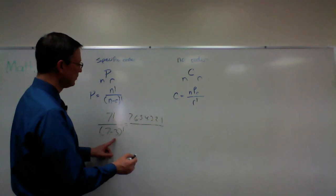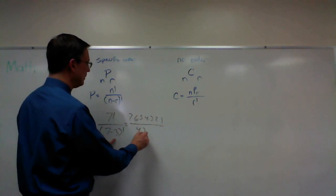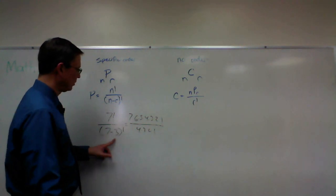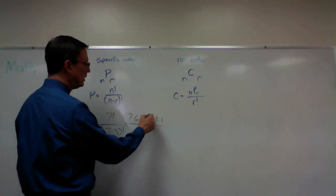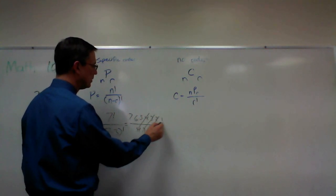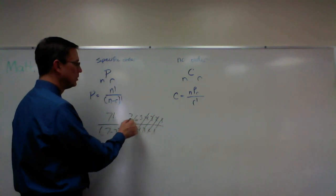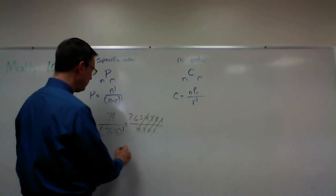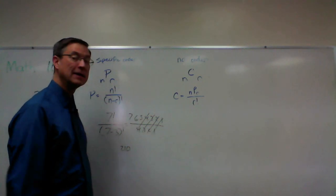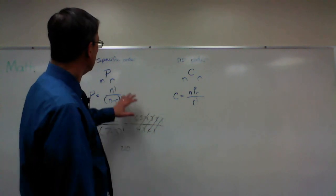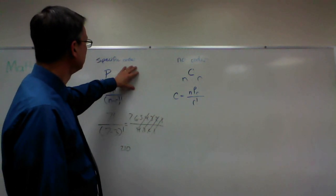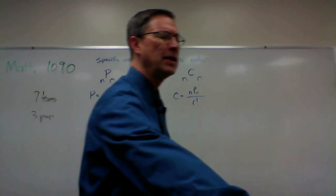And then down here, 7 minus 3 is 4, so 4 times 3 times 2 times 1. Now we can notice easily that this cancels, this cancels, this cancels—of course one cancels out—so the answer is 7 times 6 times 5, which is 210.